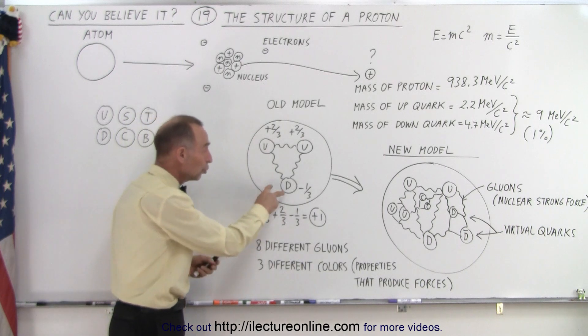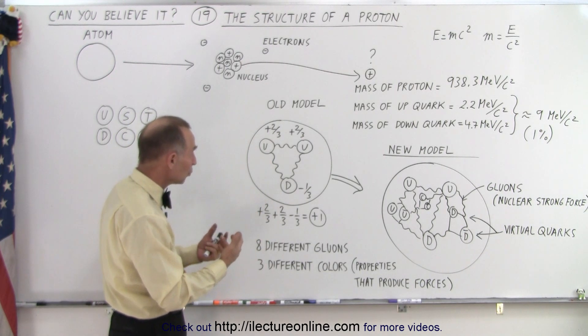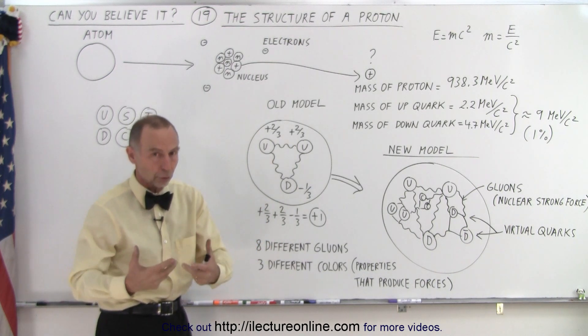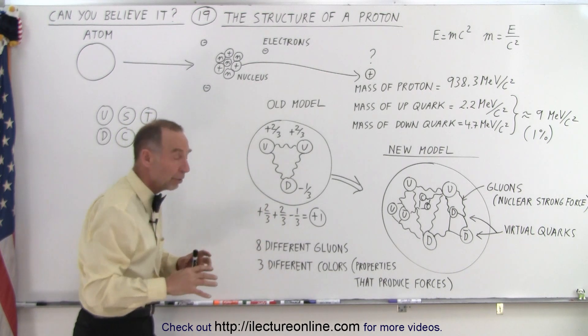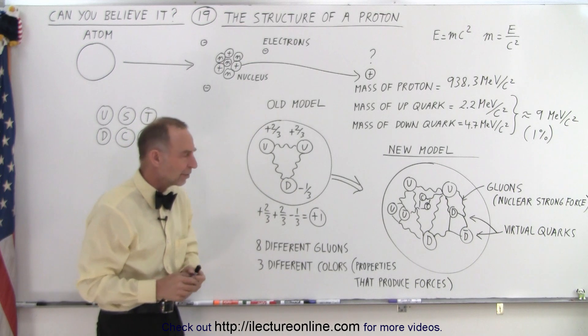For a neutron, it turns out there's two downs and one up, so one plus two-thirds and two negative one-thirds added together is a neutral charge, and so neutrons were neutrally charged. And so a neutron consisted of two downs and one up, and all of a sudden things began to, again, coalesce into something that made sense.